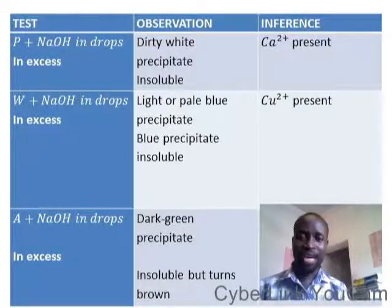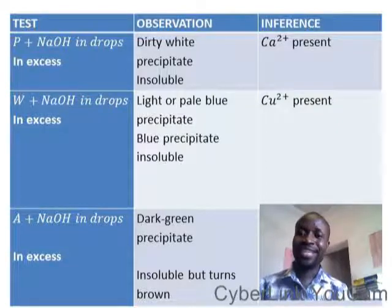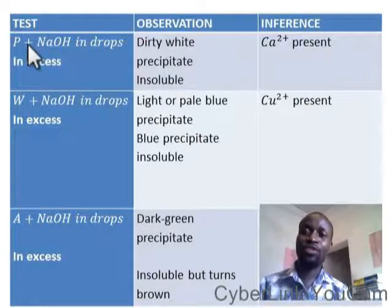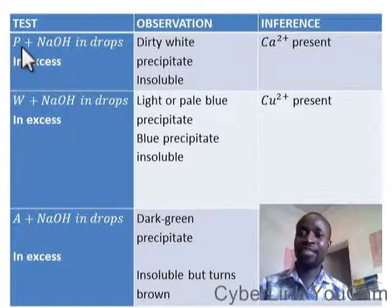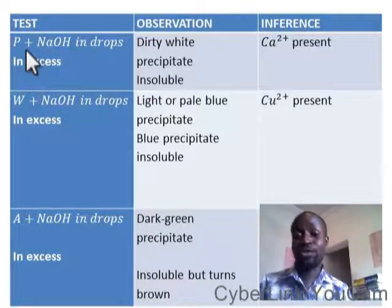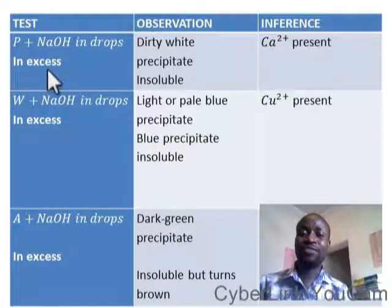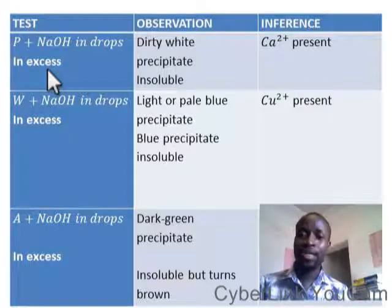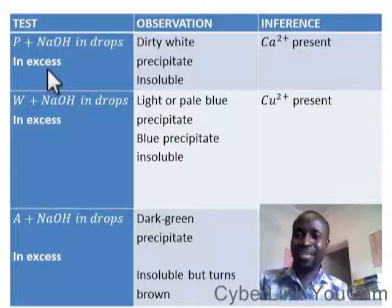In our last series, we discussed that on that test we can use any letter — you can decide to use letter A, letter Z, or letter K — any letter to represent a compound. What this letter is representing is a compound that has been dissolved; it's representing some elements inside the compound, and those are the things you want to test today.